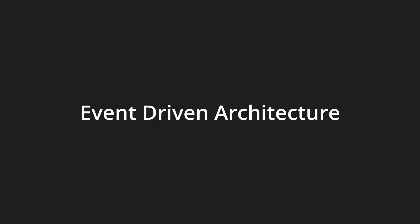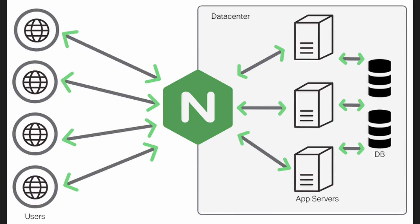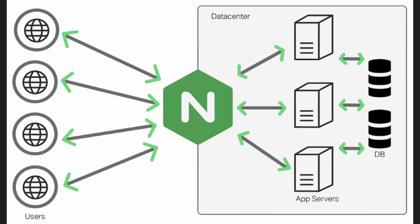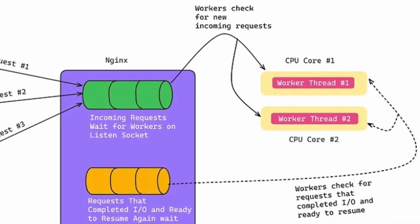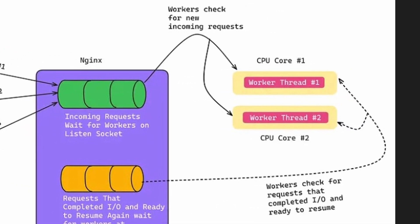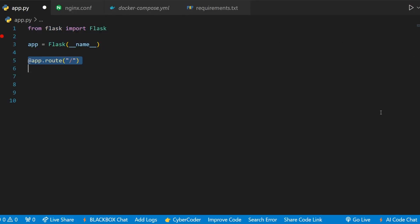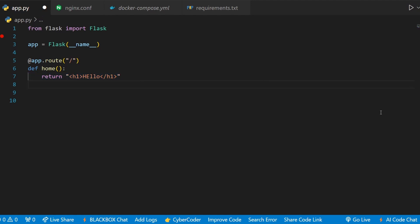Nginx, in contrast, adopts an event-driven architecture. Its workers operate asynchronously, meaning they don't block while waiting for I/O. Instead, they proceed to handle other requests, returning to the pending I/O operation when it completes. This approach minimizes idle time, reduces resource consumption, and significantly improves overall performance.